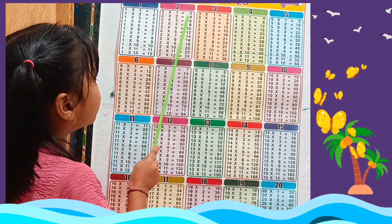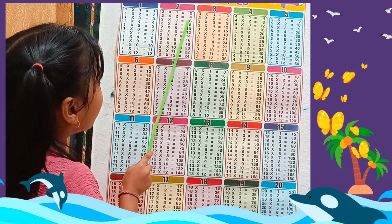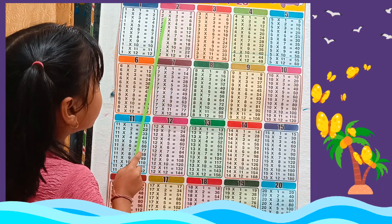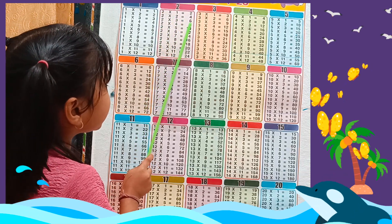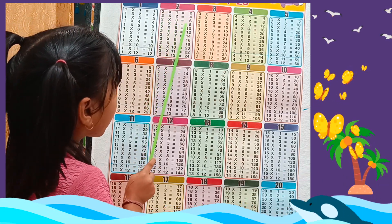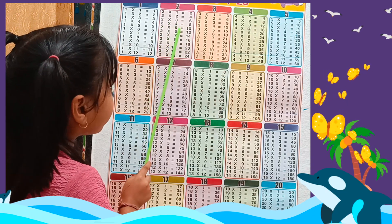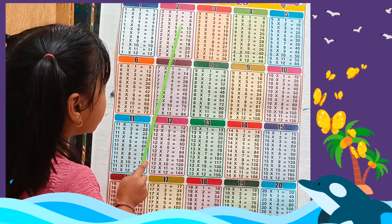2 1s are 2, 2 2s are 4, 2 3s are 6, 2 4s are 8, 2 5s are 10.